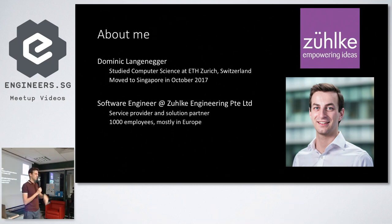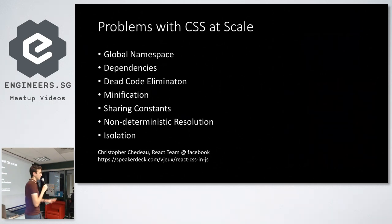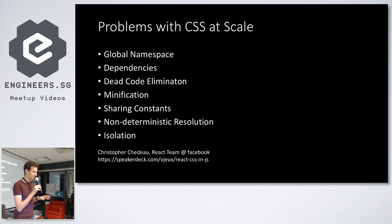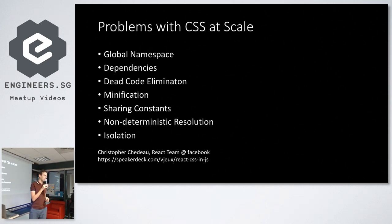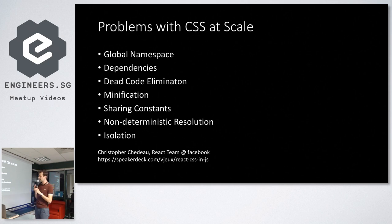Does anybody know what kind of problems you usually encounter when you do CSS? I wrote some down — this list is from one of the core developers of React. One thing we encounter very often, especially on large projects where a lot of developers are involved, is the global namespace in CSS. You don't really know if the same class name has been used before by somebody else without searching over the whole codebase and multiple files.